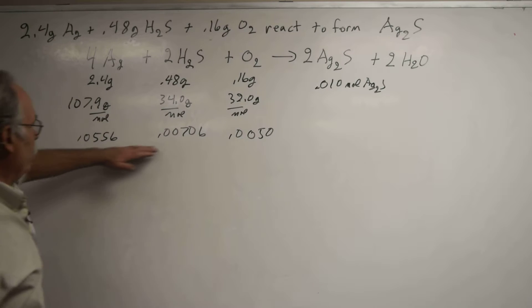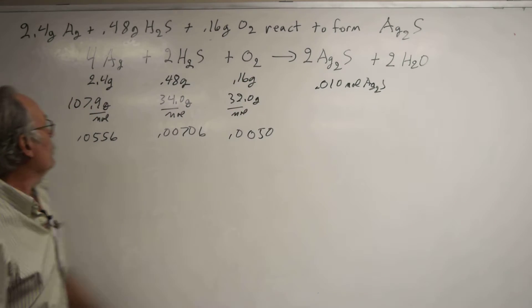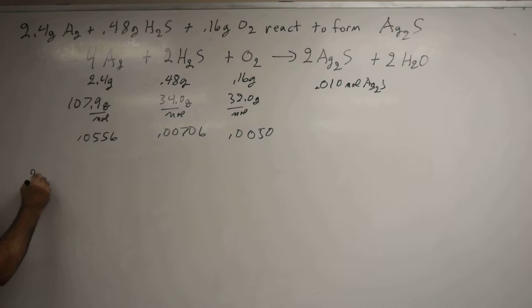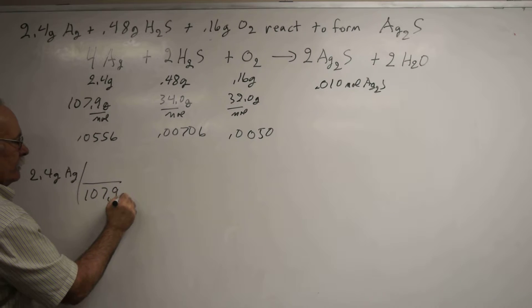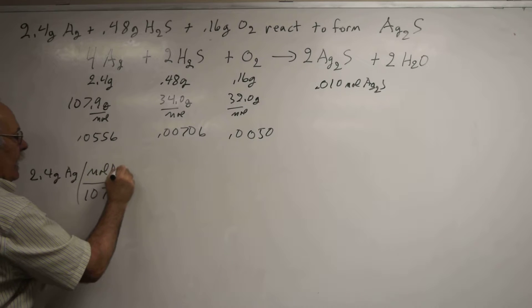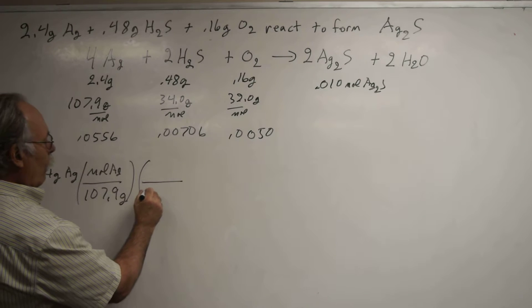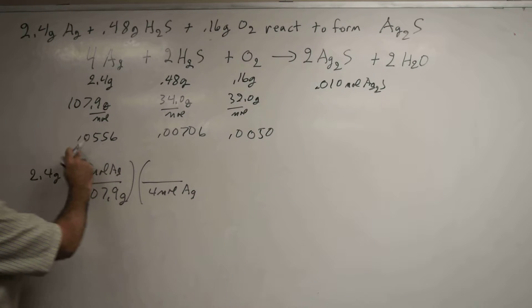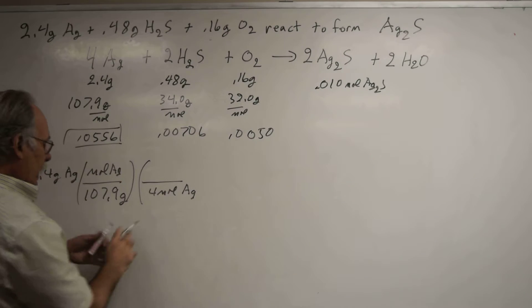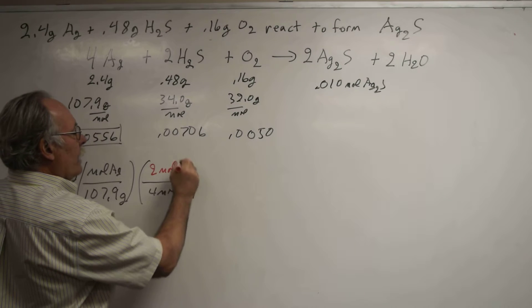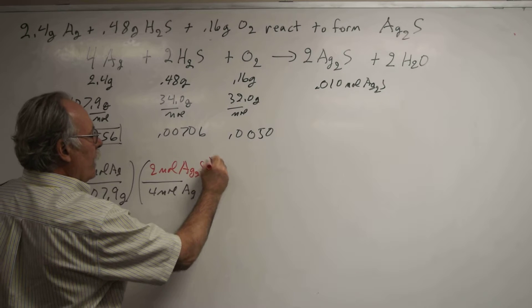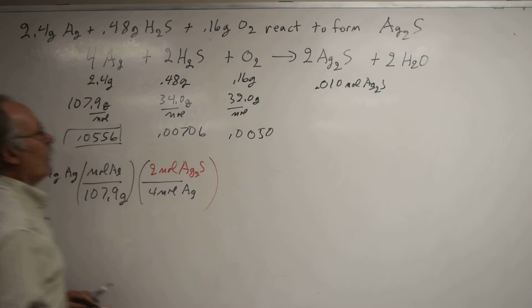Now let's walk our way through this the long way. If I have 2.4 grams of silver, I want to convert that to moles, so I divide by the molar mass, 107.9 grams per mole of silver. Then I convert this to moles of Ag2S. In the conversion step, I have 4 moles of silver, which is this number here, 0.0056 in its unit list. The grams of silver cancel, the moles of silver cancel. Then I would multiply by 2 moles Ag2S. That would have given me two times this number, which is bigger, so that was an excess reagent.